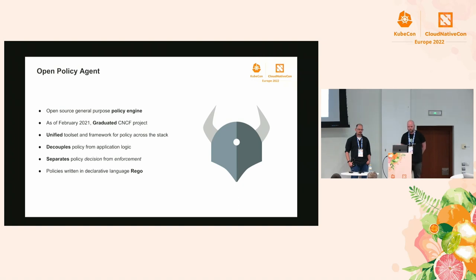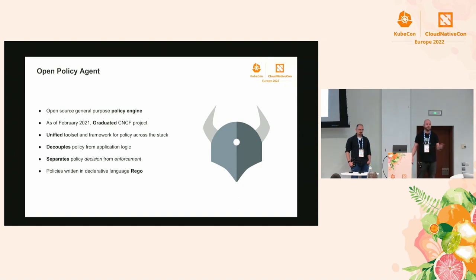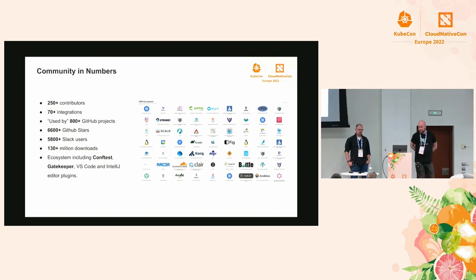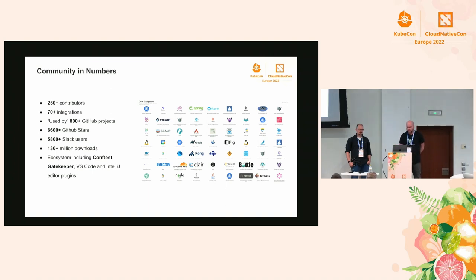OPA builds on the idea of decoupling policy from your application or business logic. We separate policy decisions from enforcement - meaning OPA makes decisions but doesn't enforce them. If OPA says this person should not be allowed to view this endpoint, it's still up to the application to enforce that decision. Policies are written in a declarative language called Rego. OPA now has over 250 contributors, 70 listed integrations, 800 projects on GitHub using OPA, 6,600 GitHub stars, 5,800 Slack users, and over 130 million downloads.